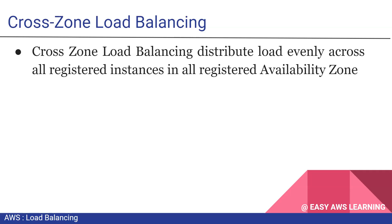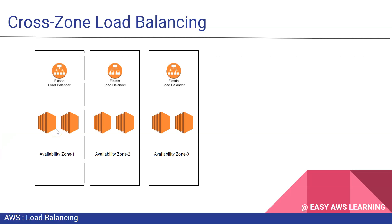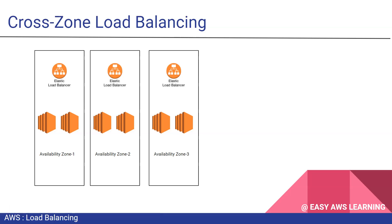Let's have a look at the diagram for more details. In this diagram we take an example of 3 availability zones and 6 EC2 instances. Assume we have deployed the load balancer in 3 availability zones. With cross-zone load balancing enabled, the first load balancer instance will distribute the traffic to all EC2 instances registered in the load balancer.